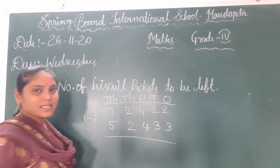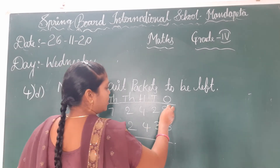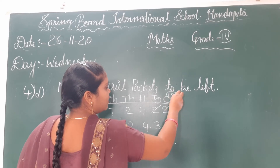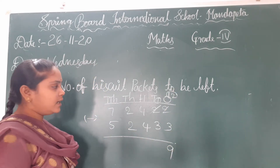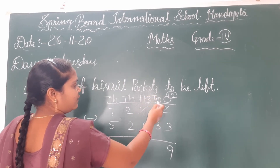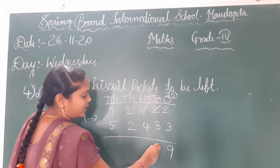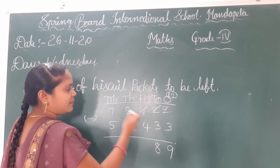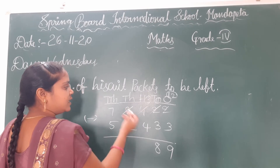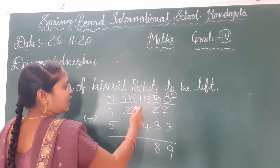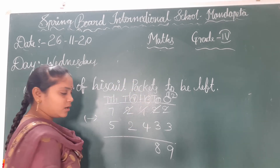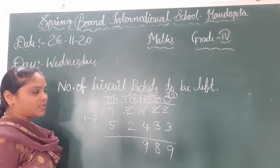2 minus 3 — we cannot subtract. So borrowing: 2 becomes 1 and this 2 becomes 12. So 12 minus 3 is 9. Here 1 is there, so again borrowing: this 4 becomes 3 and 1 becomes 11. 11 minus 3 is 8. Now 3 minus 4 — we cannot subtract. So again borrowing: this 2 becomes 1 and 3 becomes 13. So 13 minus 4 is 9.